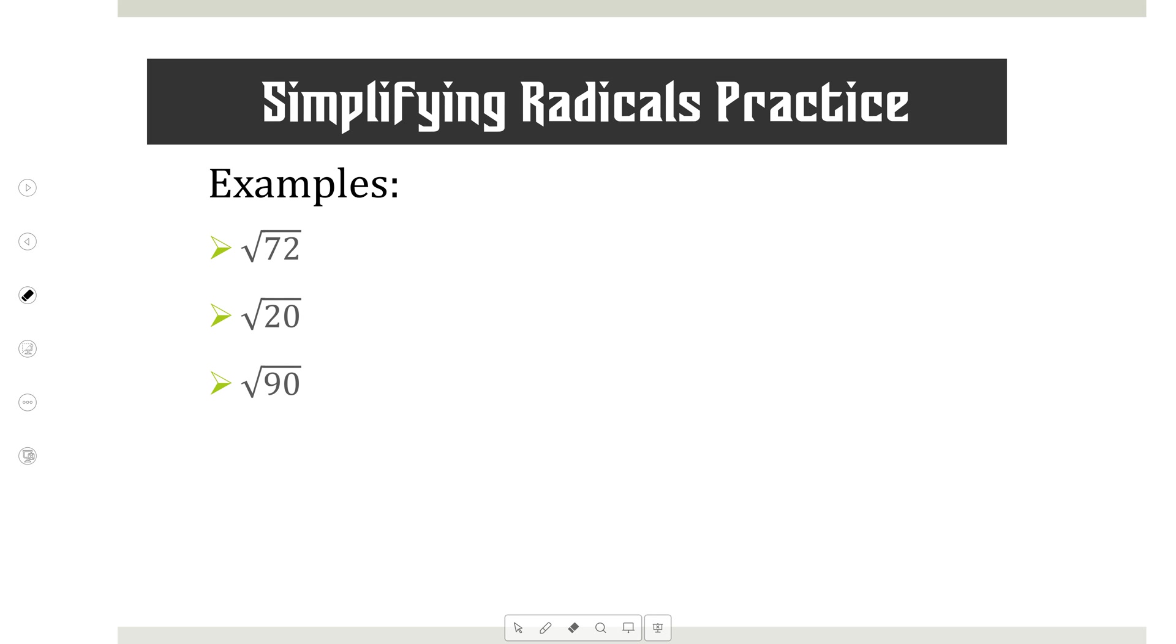Last one. Square root of 90. Julia, what do you got? Three radical ten. Three radical ten. How'd she do? Awesome. So you are experts at simplifying radicals, yes? All right, so in some of the stuff we're going to do today, you're going to get answers that are going to be in radical form. Those radicals should be simplified.